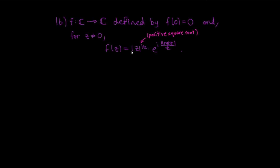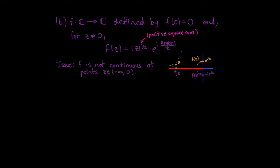However, there's an issue: this function is not continuous at points on the negative real axis. To see why, think about what happens when you approach a negative real number −r through complex numbers coming from above versus below. Approaching from above, the principal values of the argument approach π, so f approaches i·r^(1/2). Approaching from below, the principal value of the argument approaches −π, and f approaches −i·r^(1/2). The issue is that the principal value of the argument has a discontinuity along the negative real axis.